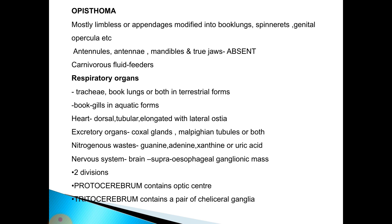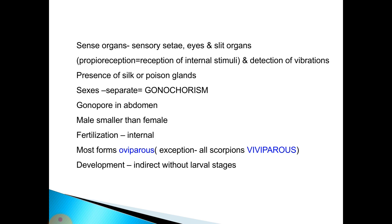The nervous system consists of a brain — a supraesophageal ganglionic mass — divided into two parts: the protocerebrum, containing the optic center, and the deutocerebrum, containing a pair of cheliceral ganglia. Sense organs include sensory setae, eyes, and slit organs used for proprioception and detection of vibrations. Silk or poison glands may be present. Sexes are separate; gonopore is in the abdomen; males are smaller than females; fertilization is internal. Most forms are oviparous, except scorpions, which are viviparous. Development is direct, without larval stages.